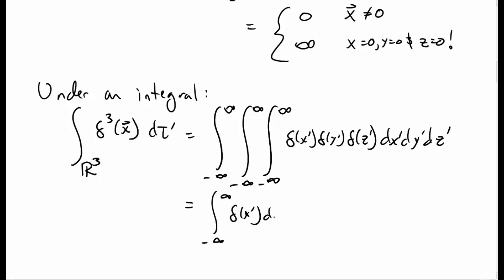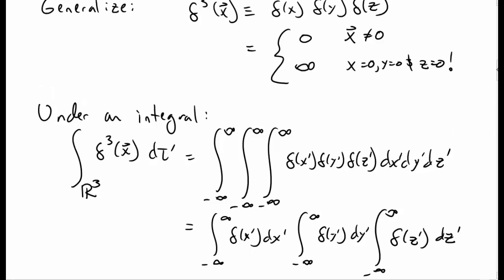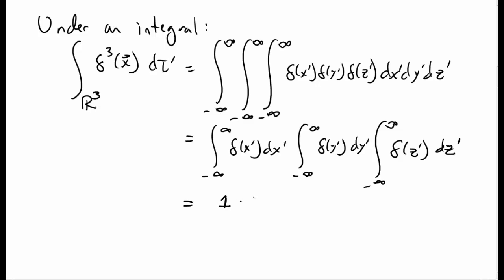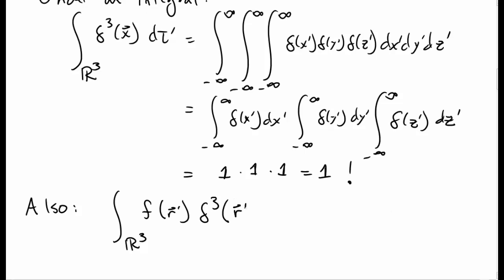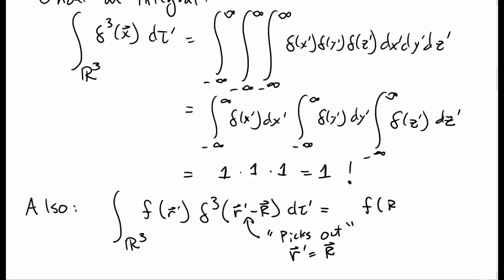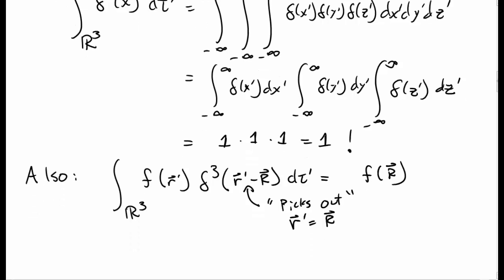Under an integral, a three-dimensional delta function behaves very similarly to the 1D case. You can also use it to pick out values of functions. If you have a delta function of r-prime minus R, where big R vector is some constant vector, this is going to pick out a value at r-prime equal to big R. So this integral gives you the function evaluated at big R vector.